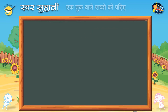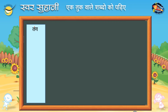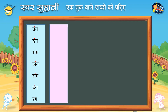एक तुकवाले शब्दों को पढ़िये: तंग, दंग, भंग, जंग, संग, धंग, रंग।